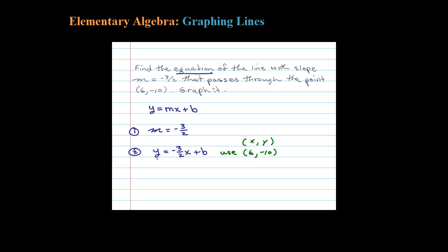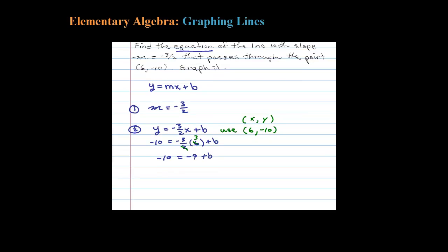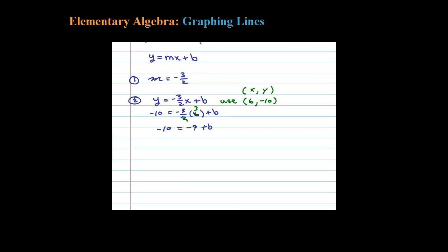When y is -10, x is supposed to be 6. The only variable left here is B, and once we find B we're pretty much done. So 2 goes into 6 three times, so that leaves us with -10 = -9 + b. Add 9. -1 = b.